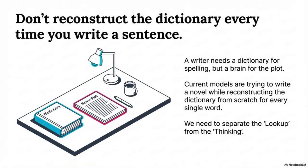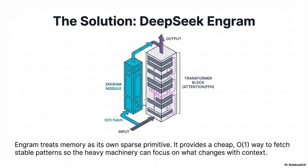It's like we're finally admitting that trying to do stable pattern lookup with dynamic thinking modules was a fundamental design mistake. It gives you, the model designer, two clean sliders: budget capacity for stable facts and budget capacity for complex, context-dependent thought.